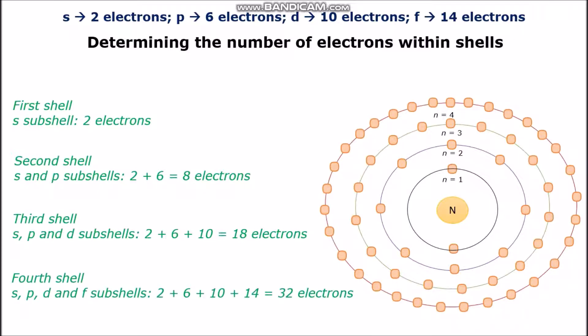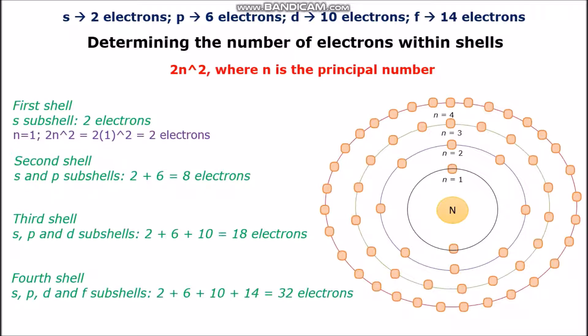As for the fourth shell, it has the S, P, D, and F sub-shells, given a total of 32 electrons. To make this simpler, a general formula is used: 2 times N to the power 2, where N is the principal quantum number or simply the value of the electron shell. And as you can see, the solutions are the same — 2 electrons in the first shell, 8 electrons in the second shell, 18 electrons in the third shell, and 32 electrons in the fourth shell.